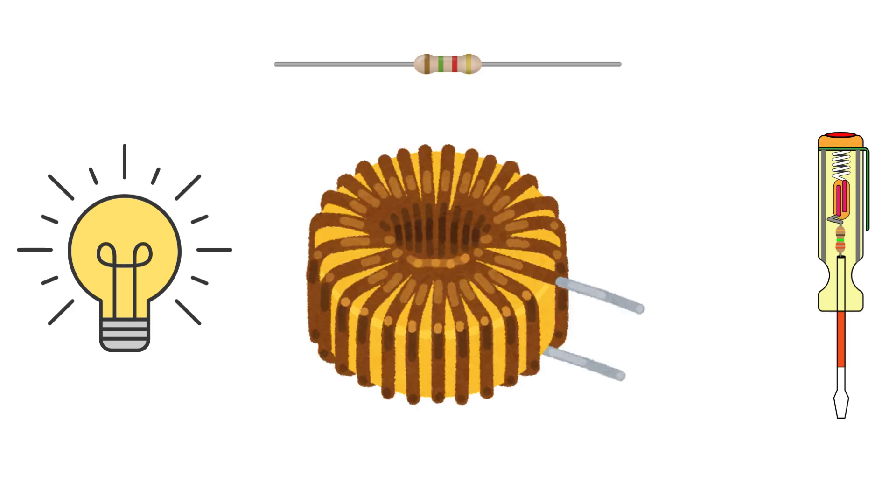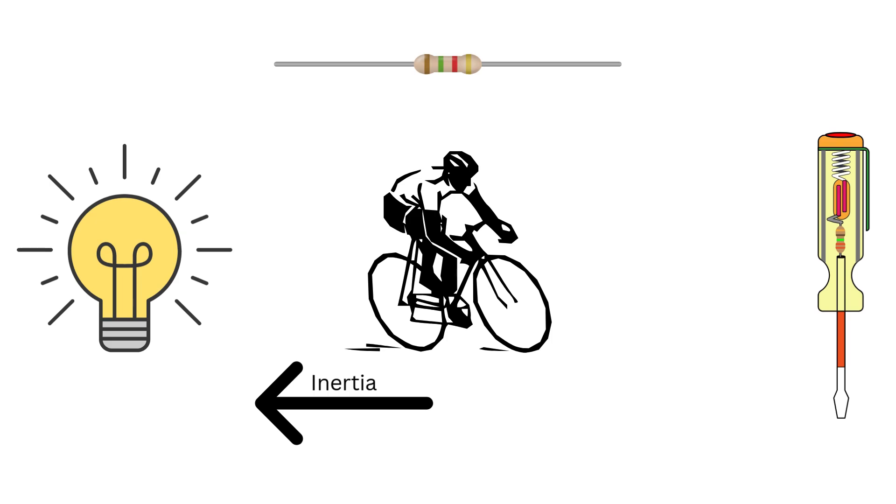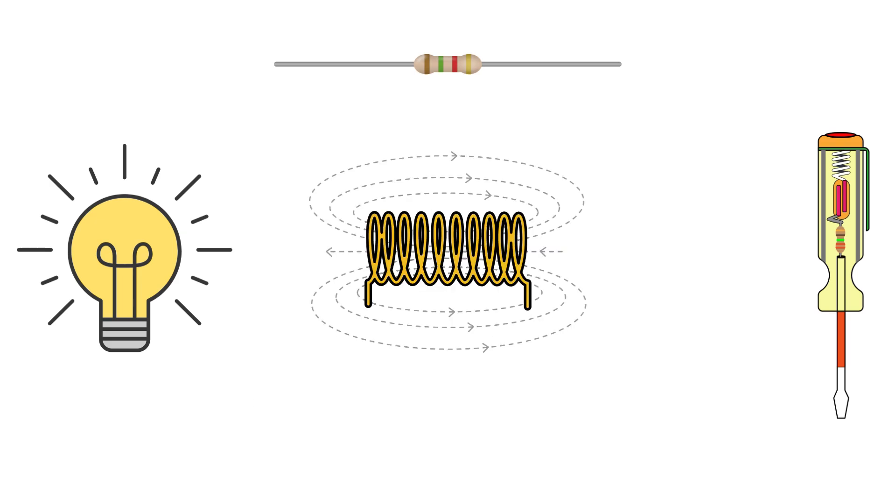Now you might be wondering how does this actually work? Imagine you are riding a bike. If you try to speed up suddenly, you feel a pullback, right? That's inertia. Inductors work similarly. They resist changes in current. So if you suddenly increase the current, the inductor will oppose that change by generating a voltage in the opposite direction. This property is called inductance and it's measured in henrys.